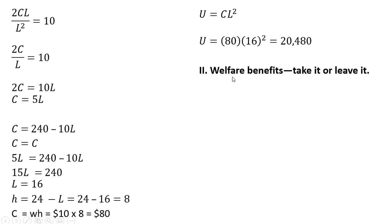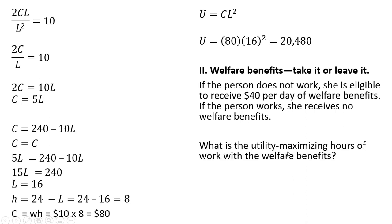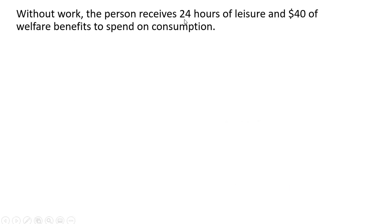Now let's look at the case where this person has access to welfare benefits. It's a take-it-or-leave-it scenario. If the person does not work, she is eligible to receive $40 per day of welfare benefits. If the person works, she is no longer eligible for welfare benefits — so only non-workers receive this $40 per day. Without work, the person receives 24 hours of leisure and $40 of welfare benefits to spend on consumption.